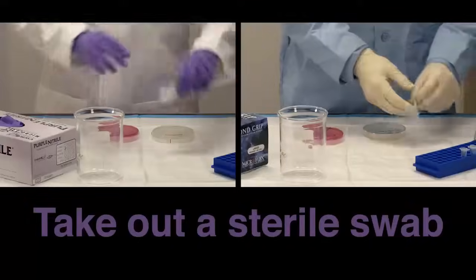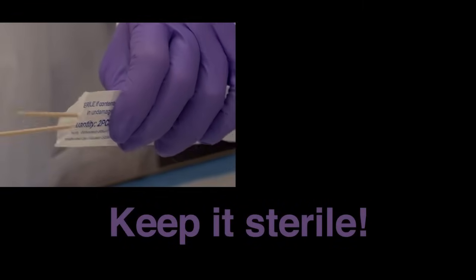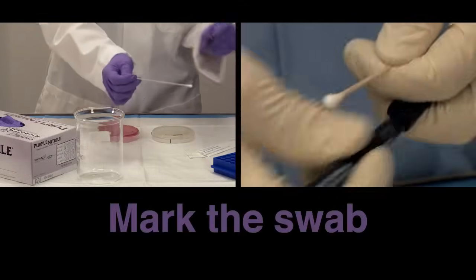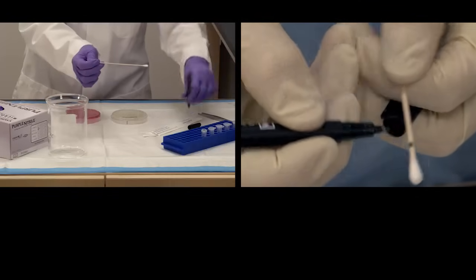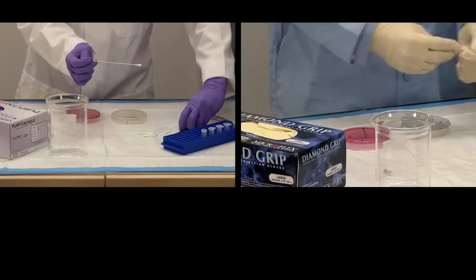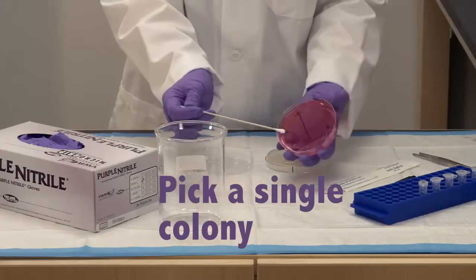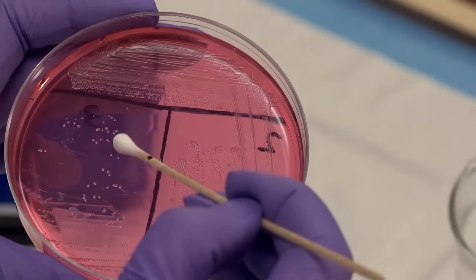Take out a sterile swab. It's important not to contaminate the cotton tip. Draw a black dot next to the tip. This will help you locate which side of the cotton swab is inoculated with bacteria. Find a single colony to pick. Make sure you can see the black dot when picking the colony.